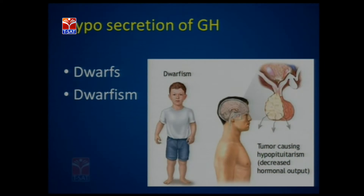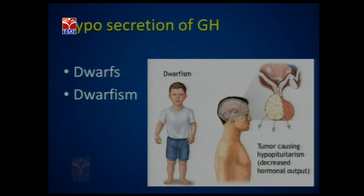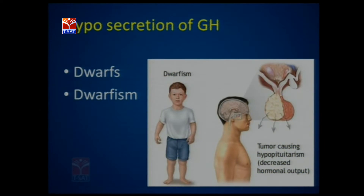Due to hyposecretion of growth hormone — meaning release of the hormone in less amount — the individual develops a deficiency called dwarfism, also known as pituitary dwarfism. The individuals are called dwarfs. The symptoms include the person not growing tall, the limbs not growing, the sex organs not developing, and generally the person showing about three feet in height — a thirty-year-old man looking like a three-year-old boy.